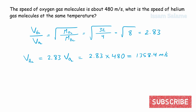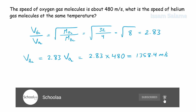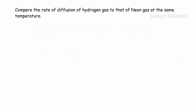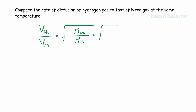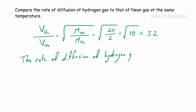Exercise 2: Compare the rate of diffusion of hydrogen gas to neon gas at the same temperature. Rate of H₂ / rate of Ne = square root of (molar mass of Ne / molar mass of H₂) = square root of (20 / 2) = square root of 10 = 3.2. This means hydrogen gas diffuses 3.2 times faster than neon gas.